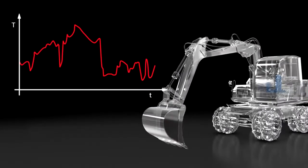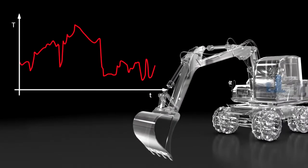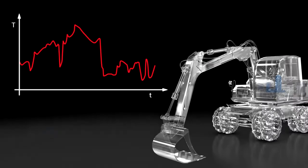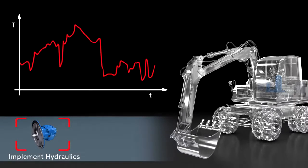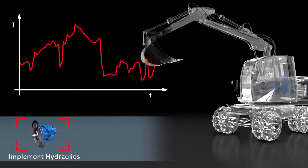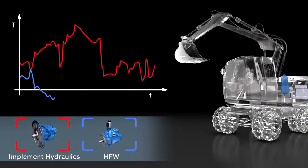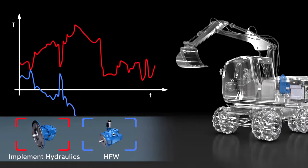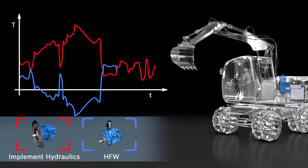There are now two principal systems operating at the combustion engine. One is the implement hydraulics, which primarily influences the load on the combustion engine. And the other is the HFW, which can influence the load but also provides the drive torque.